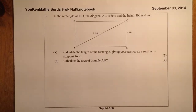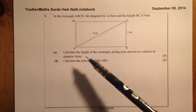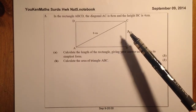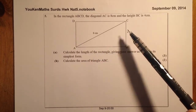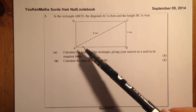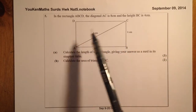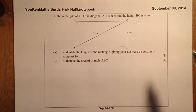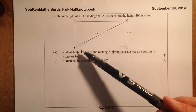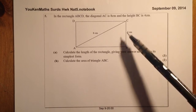This question here could be a standard exam type question where we've got a rectangle and what we have to do is find out the length of the rectangle based on having 4 centimetres here and 8 centimetres there, and further on from that, working out the area of the triangle ABC. So what we have here is a rectangle with a diagonal of 8 centimetres — that's AC — and the height is going to be 4 centimetres.